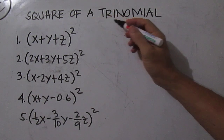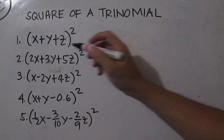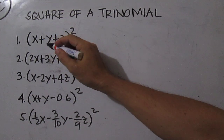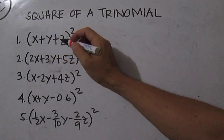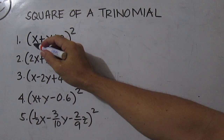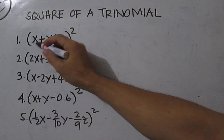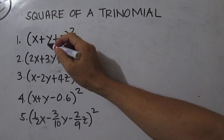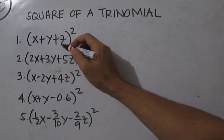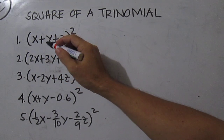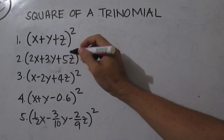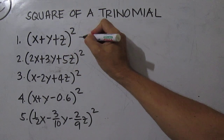The square of a trinomial consists of the square of the first term, the square of the second term, the square of the third term, twice the product of the first and second term, twice the product of the first and the third term, and twice the product of the second and the third term. For number 1,